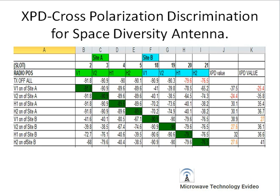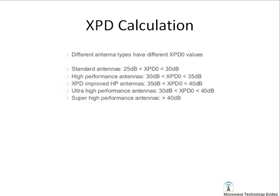When we turn on the V1 transmitter, we get approximately -41 dBm RSL at V1, and -39.8 dBm at V2. The same measurements are recorded for H1 and H2. The XPD value is the difference between V1 and H1, which is approximately -37.5 dB, and for V2 and H1 it is approximately 25.4 dB. We calculate the XPD value for all radios in this way.